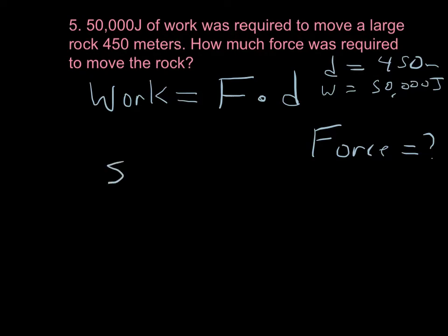So, 50,000 joules equals F times the value for the distance, 450 meters. Notice I didn't try to rearrange. I just plugged our values in. Now, I'm going to do some algebra.